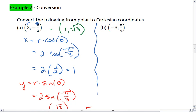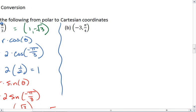Alright, let's try another example. You can try this one on your own first, and then resume the video when you're ready to see the solution. For this example, our r is negative 3, and our theta is pi-fourths.